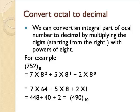Like in the case of binary to decimal, we count the powers from the right side. There are three digits, so the powers are 0, 1, 2. We write it as 7 into 8 raise to 2, plus 5 into 8 raise to 1, plus 2 into 8 raise to 0.